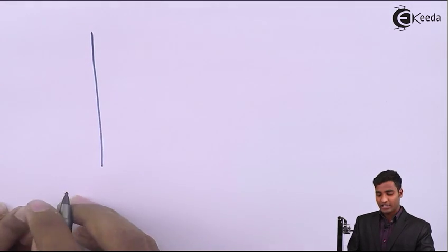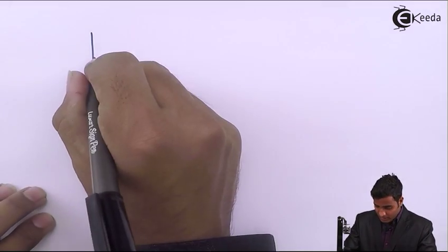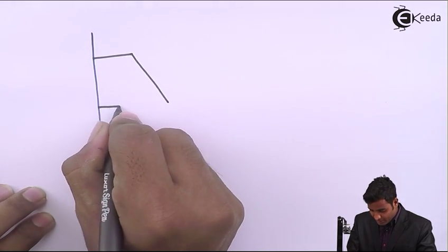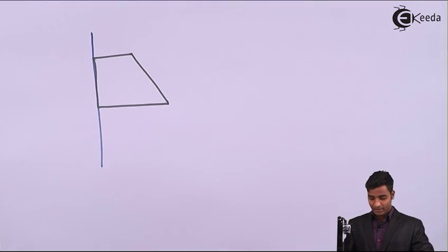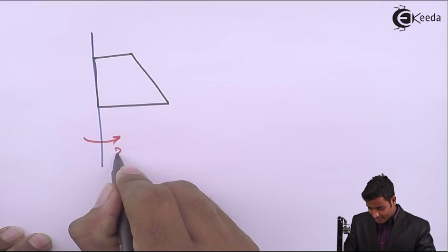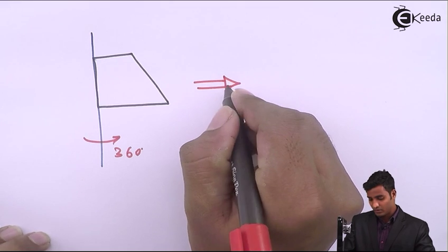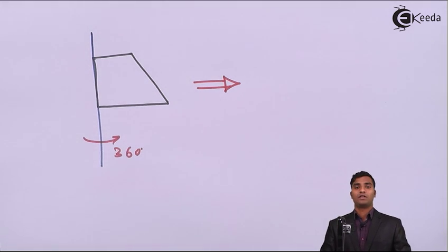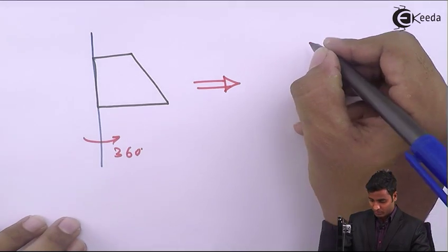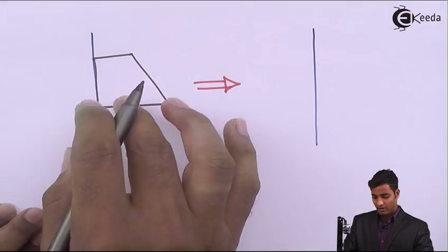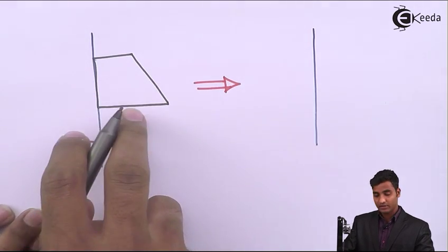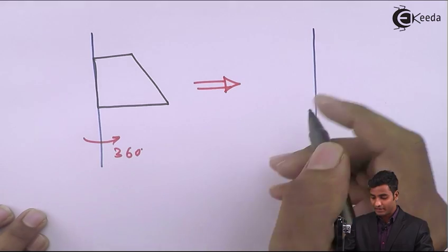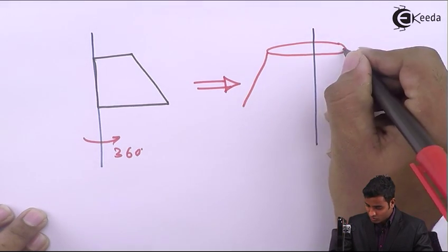One more example we will take is of a trapezium. This is the axis of rotation and this is the trapezium. After rotating or revolving this trapezium about the axis of rotation by 360 degrees, the geometry which is generated will be a solid frustum.